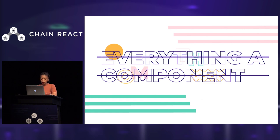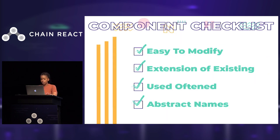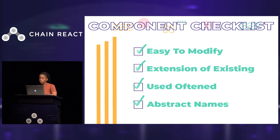How do you know something is a component? I made a little checklist. If you can easily change or modify it, then it's probably the same component. But if it requires a lot of changes, then you probably need to make a new component. What it looks like and the purpose of the component can help determine if it's something that needs to be new or an extension of an existing one. Ask yourself: if I change the appearance of X on component A, do we expect X should also change for component B or C? If so, you might have the same component. Again, figure out how often a component is going to be used — if it's a one-off because of the design, it's probably not a component. And give components abstract names; avoid naming conventions that are so specific, like a search result snippet rather than just a snippet.